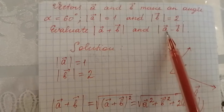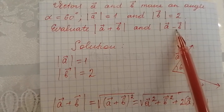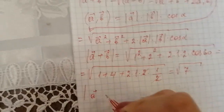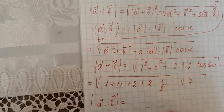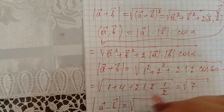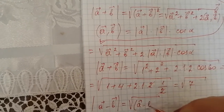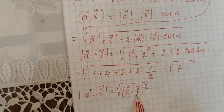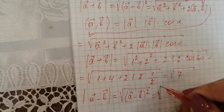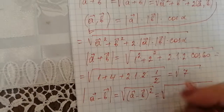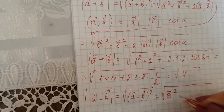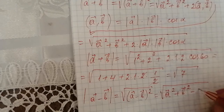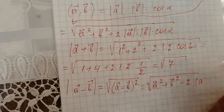Now we also have to find the absolute value of the difference of vectors A and B. This is equal to the square root of the square of the difference of vectors A and B. Simplifying, this will be the square root of |A|² plus |B|² minus 2 times the scalar product of vectors A and B.